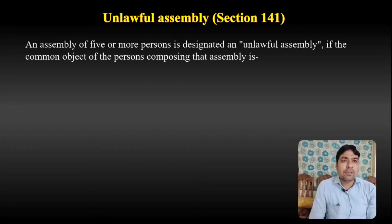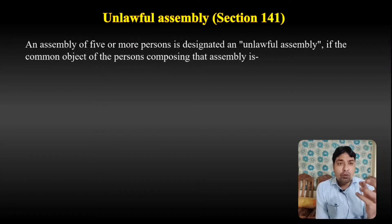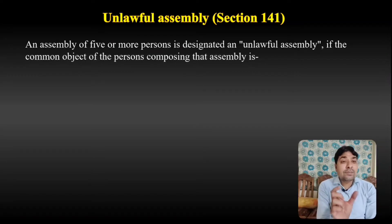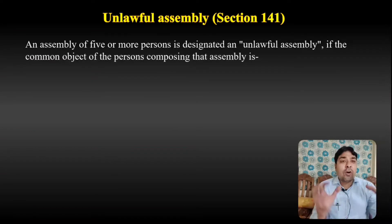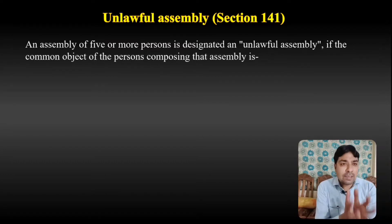According to Section 141, an assembly of five or more persons is designated an unlawful assembly if the common object of the persons composing that assembly meets certain criteria. So which assembly is an unlawful assembly? If the assembly is of five or more persons, and if the common object of that particular persons composing the assembly falls under specified grounds.